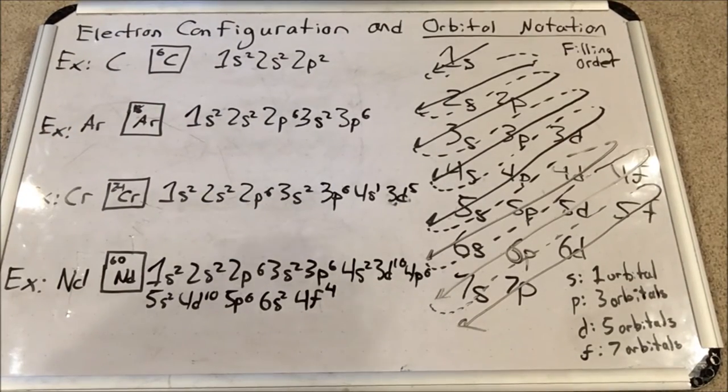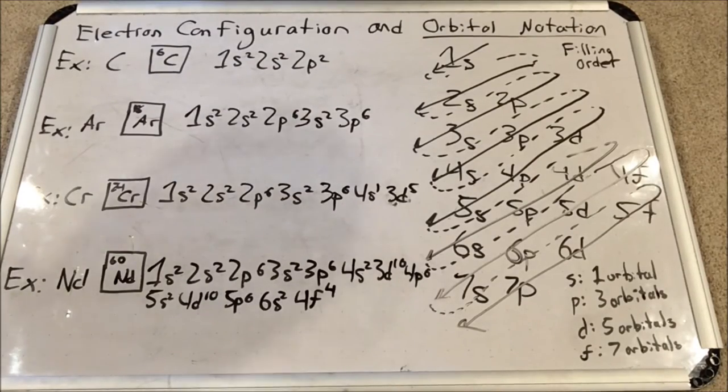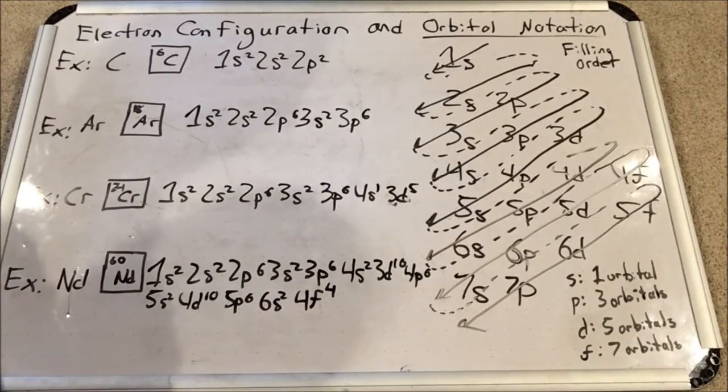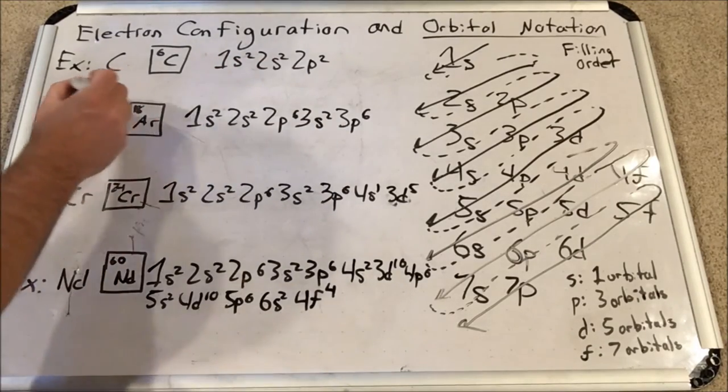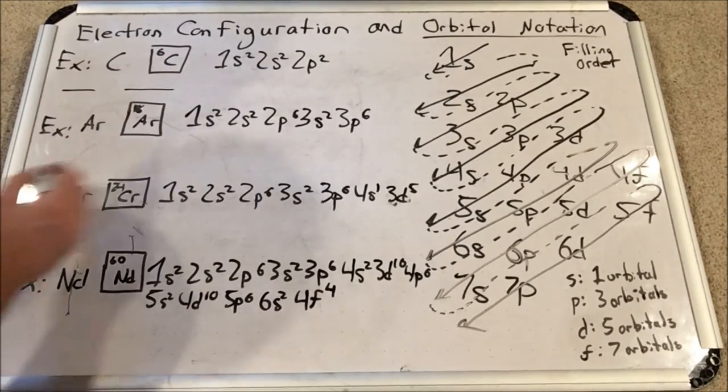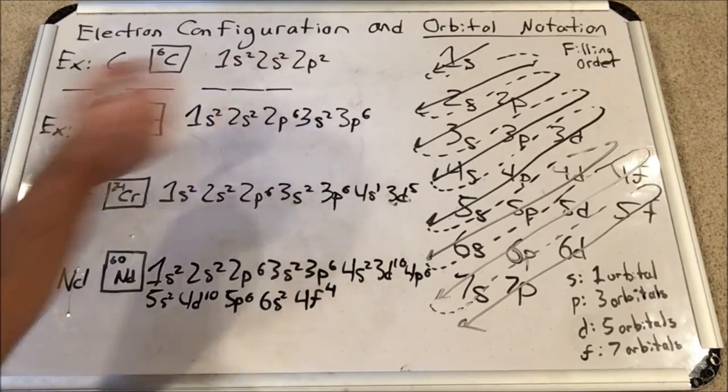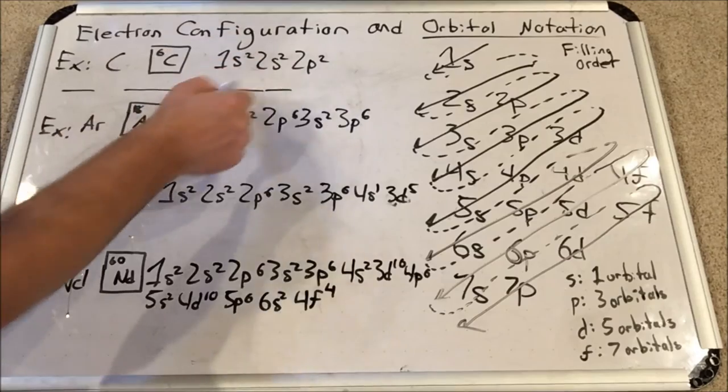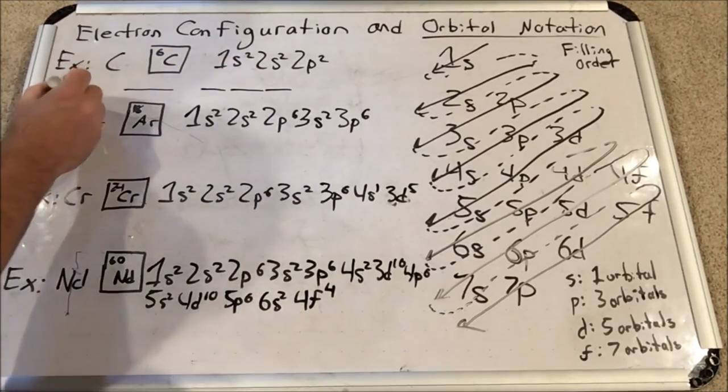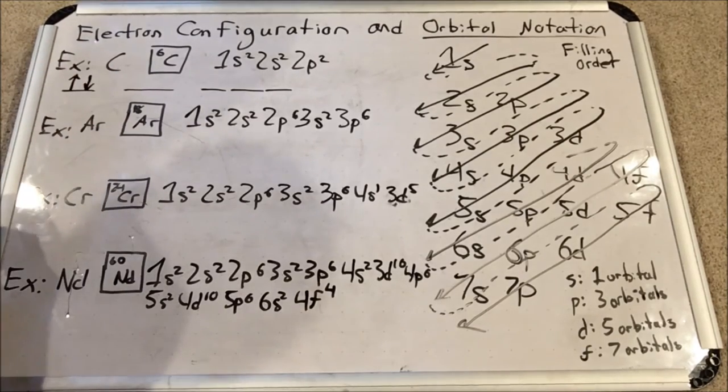Here is its electron configuration. As you can see, it's got a 1s, a 2s, and a 2p sublevel. So that means we're going to have our 1s orbital, space, 2s orbital, space, and the 2p orbitals, all three. Notice how they are not full but I must still write all the orbitals down.